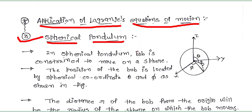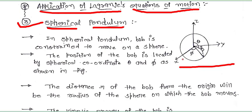We derive the Lagrangian's equation of motion for a spherical pendulum during this lecture. Now, see in the figure — that is the three-axis polar coordinate system with X, Y, and Z — that is the sphere of radius R. Suppose the radius of the sphere is R. Theta and phi are the variables representing the bob of the spherical pendulum. Now we discuss about the spherical pendulum.